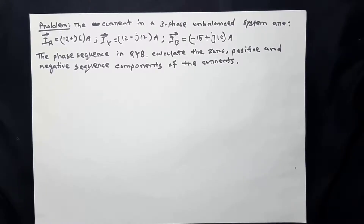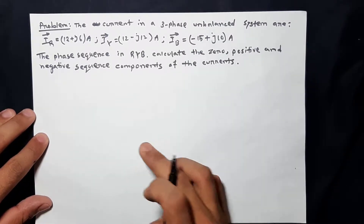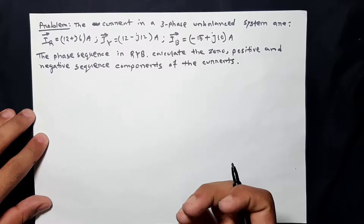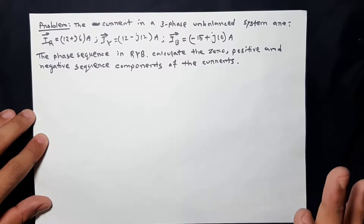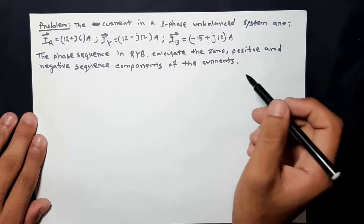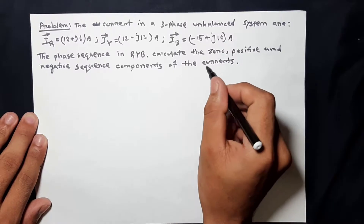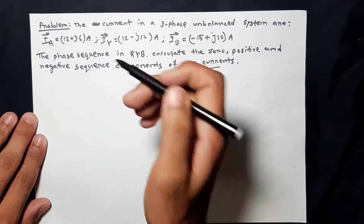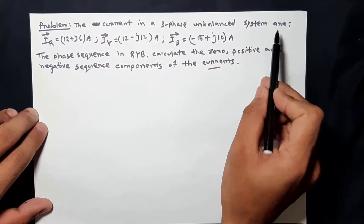Hi, this is the video of the Unsymmetrical Fault, so if you have a problem solving this, you can simply write the red phase and the symmetrical component of the current. Then you can calculate the zero, positive, and negative sequence components of the current. You can see the current in a three-phase unbalanced system.